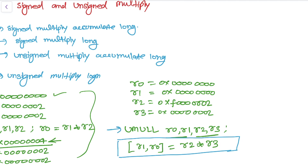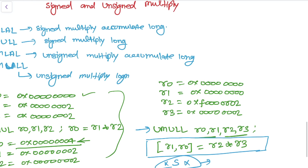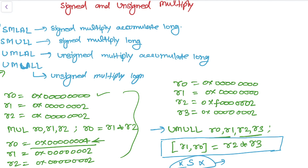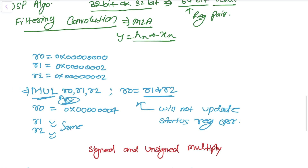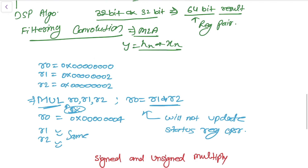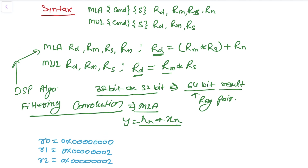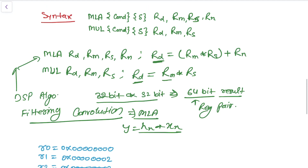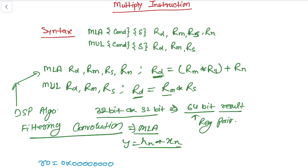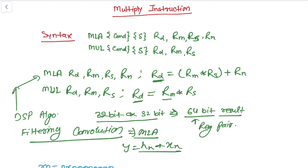This is unsigned multiply long. As you may have noticed, we are not using any S suffix, which means it will not update any status flag register. So this video has covered signed and unsigned multiply and the normal multiply instructions used in our microcontroller, as well as the MLA multiply and accumulate instruction, which is widely used in DSP algorithms, especially in filtering and convolution. Thank you for watching — please subscribe to get updates directly in your inbox.